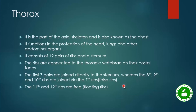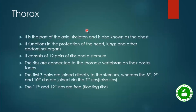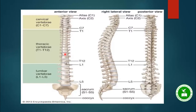The thorax, or chest, is also known as the chest cavity. It consists of 12 pairs of ribs and the sternum. The ribs are connected to the thoracic vertebrae on their costal faces, and the thoracic area is where the spinal cord passes through.